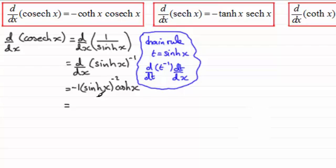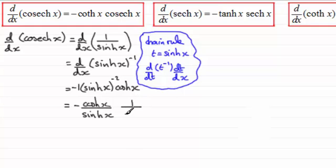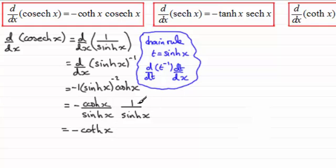Tidying this up: sinh(x) to the power minus 2 is 1 over sinh squared x. I'm going to separate that — we'll have the minus here, we'll put cosh(x) over just one of those sinh x's, and multiply it with 1 divided by the other sinh x. So we've got negative, and cosh x over sinh x is coth x. And 1 over sinh x is cosech x. So that proves the first result.